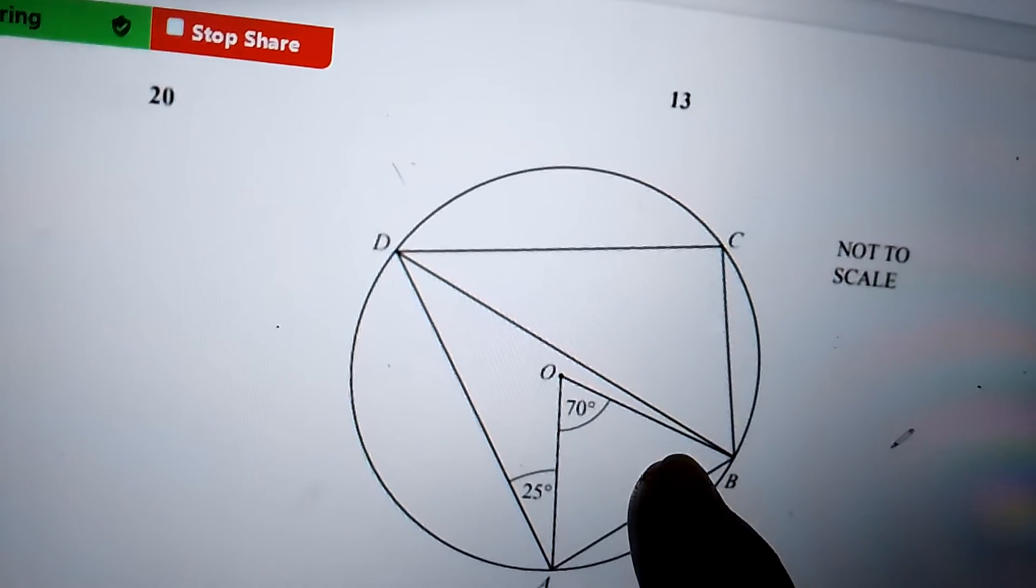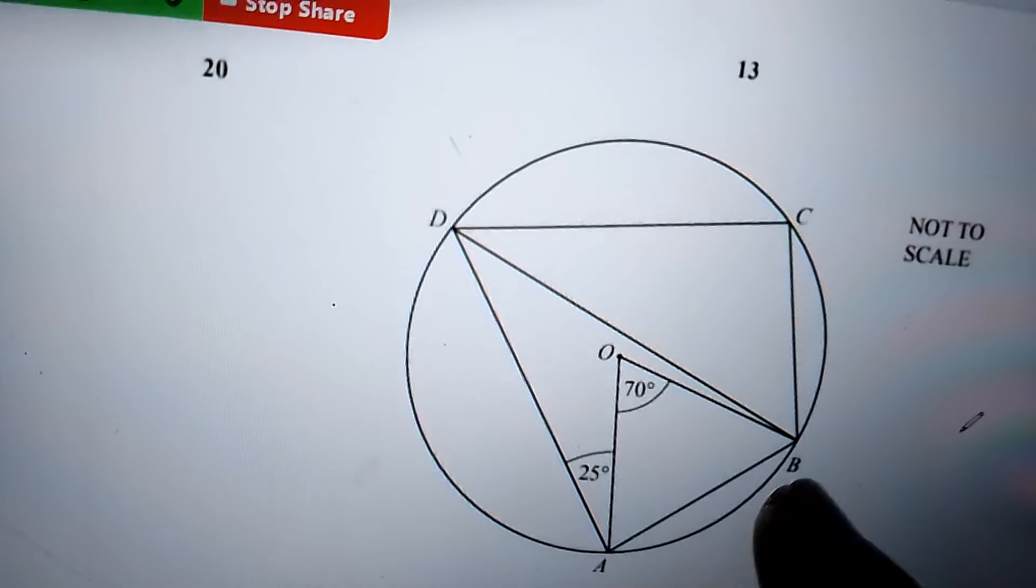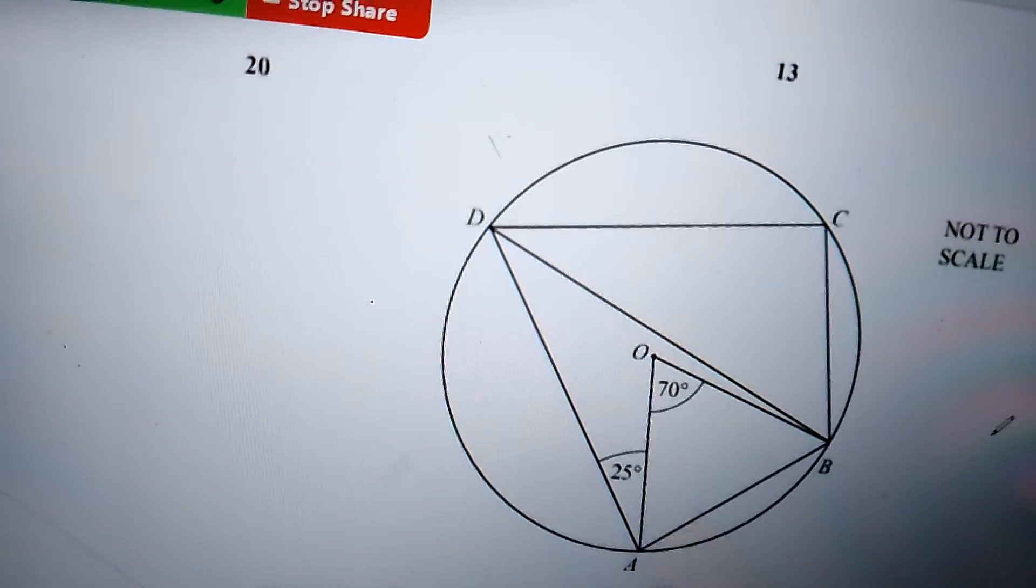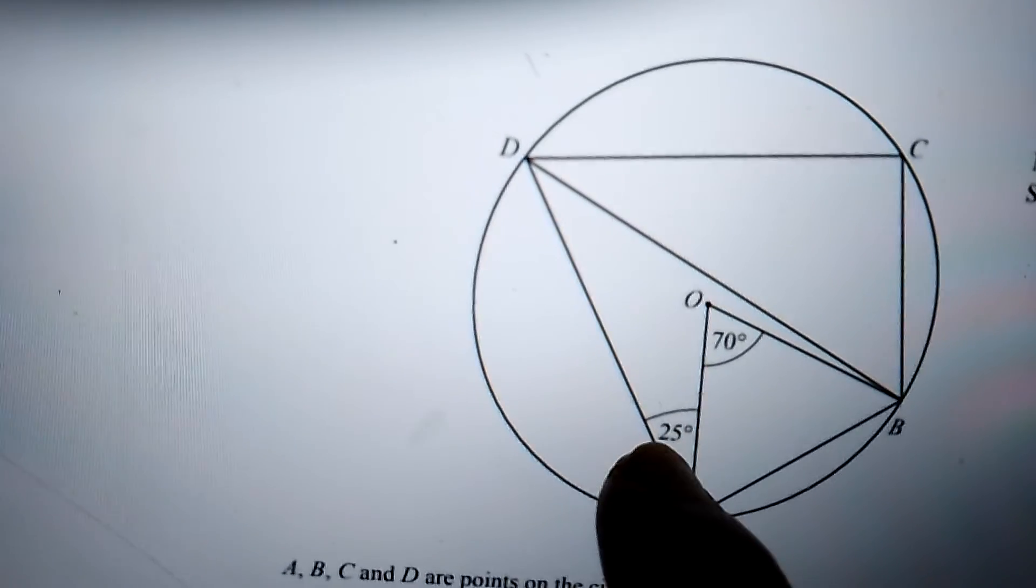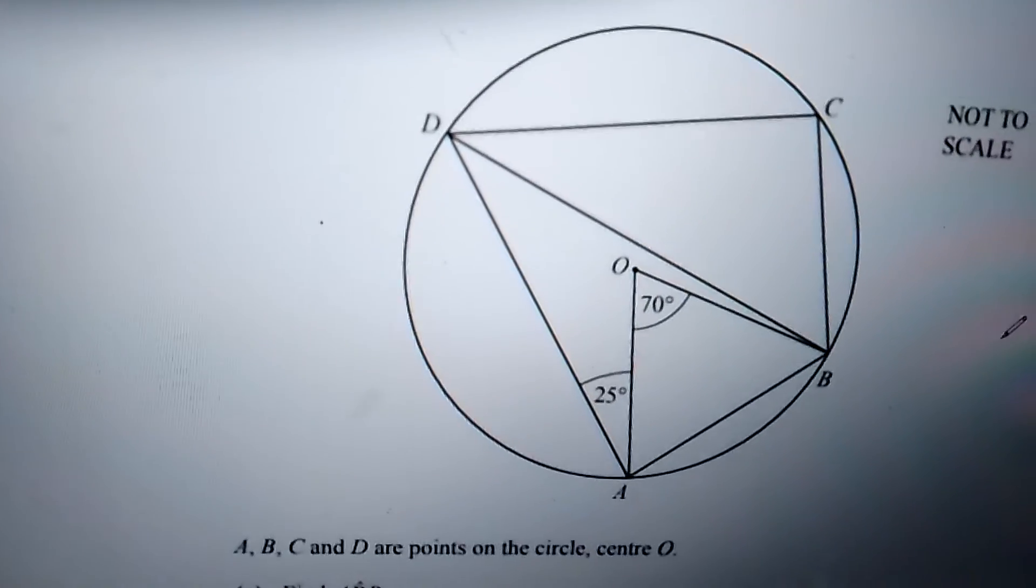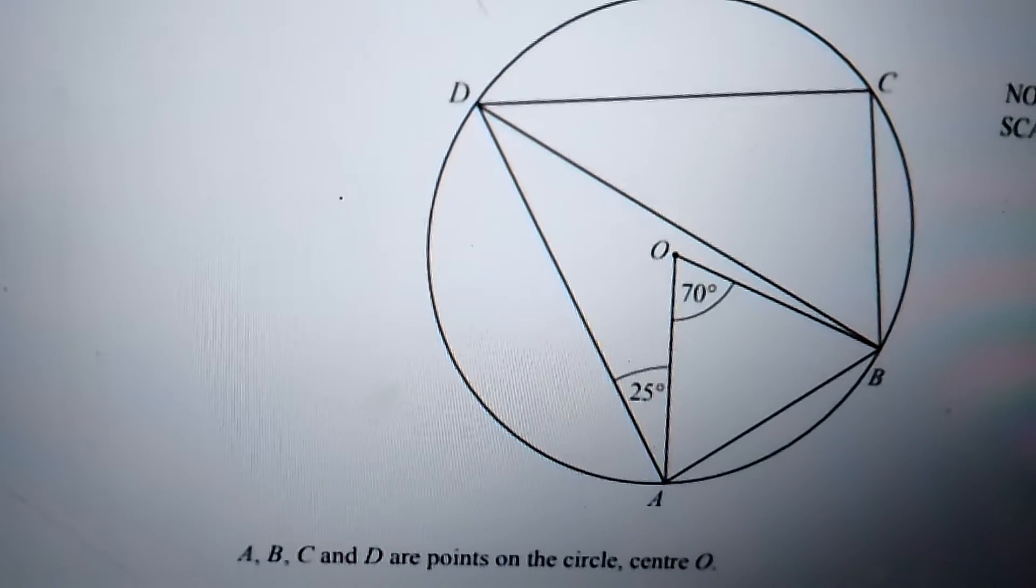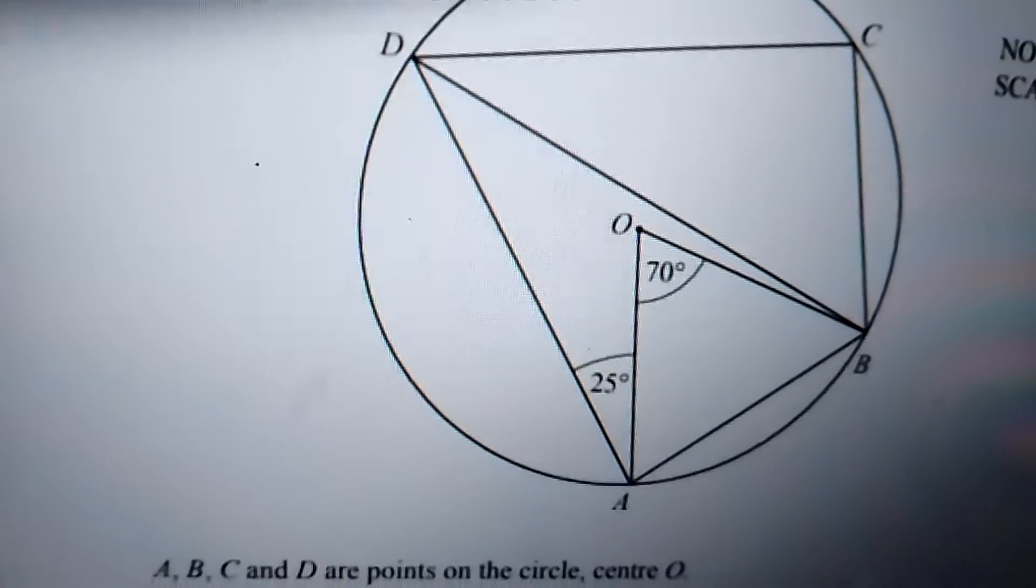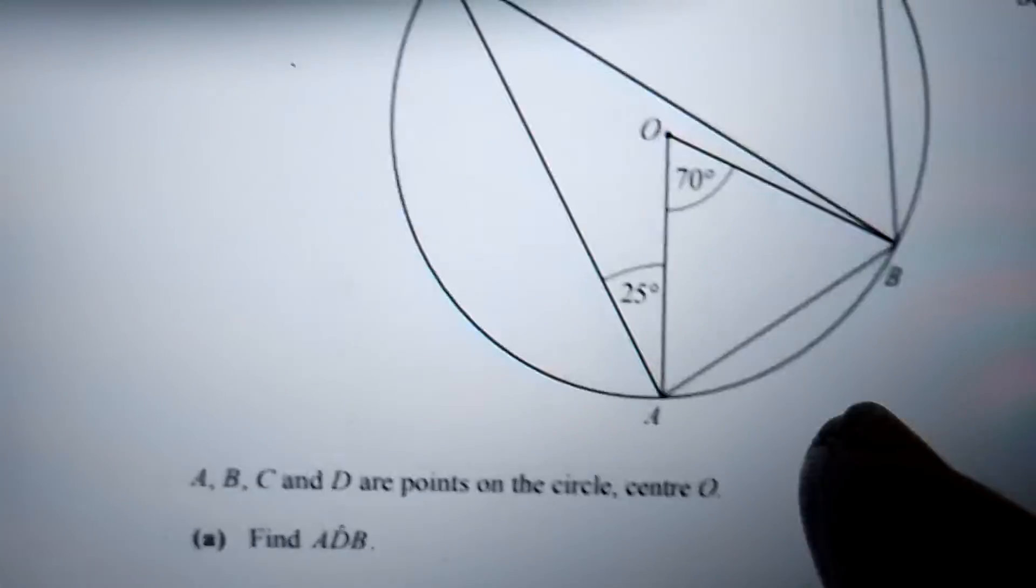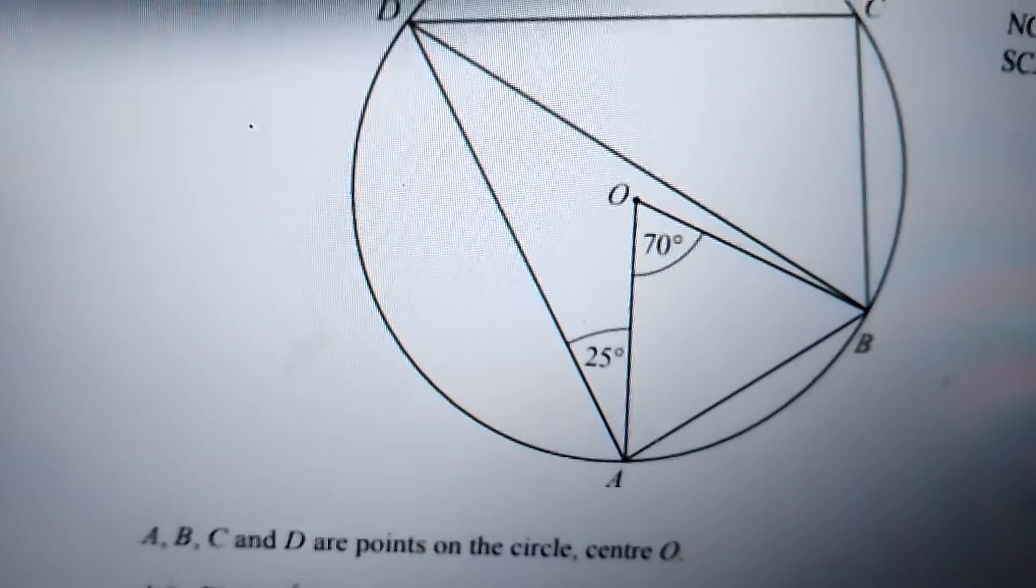55 and 25 will be added, so this will give you 80. So you'll be getting this 55 plus 25, this will give you 80 degrees.